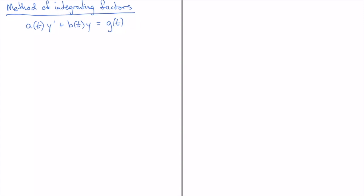In this screen test, I'm going to discuss the method of integrating factors. The method of integrating factors is a method that can be used on general first order linear equations like the one I've got here, in which I've got a y-prime term with a(t) in front of it, plus b(t) times the y term, and an inhomogeneous part g(t) on the other side. Let's start with a simple, intuitive description and example of how this method works.